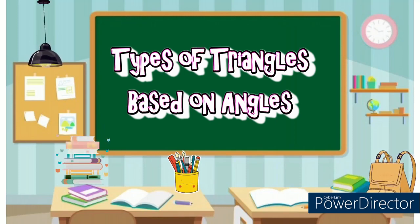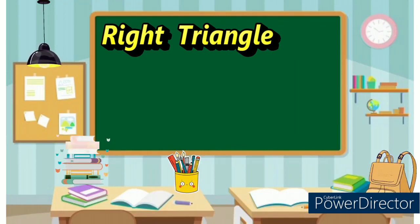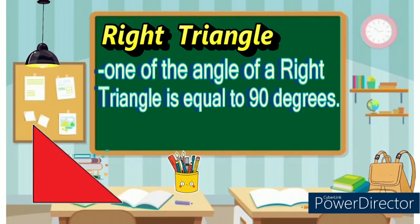Next, types of triangles are classified based on angles. Right triangle: one of the angles of a right triangle is equal to 90 degrees.